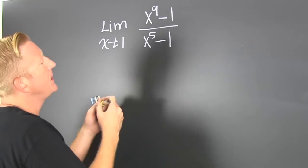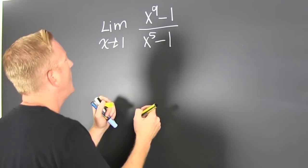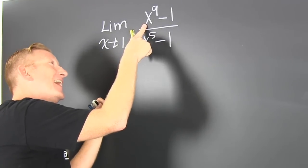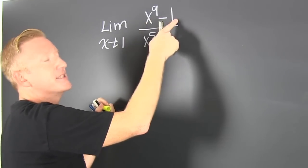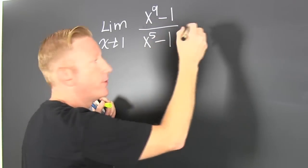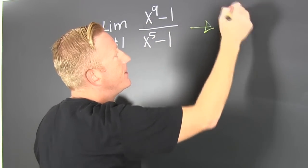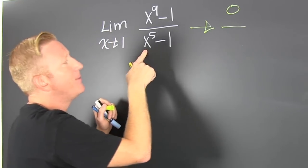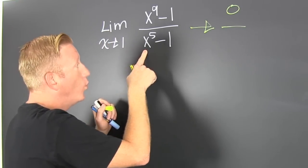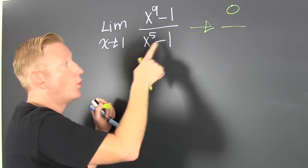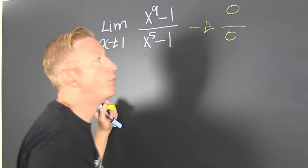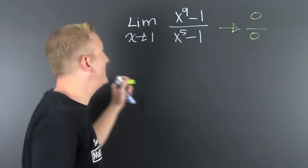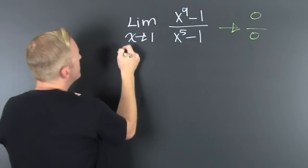If I run the limit as x goes to 1, the numerator gives 1 minus 1, which is 0. So I run this limit and it's 0 divided by the limit of the denominator: 1 to the 5th is 1, and 1 minus 1 is 0. Oh boy. This is in the 0/0 form, so we can use L'Hopital's rule.